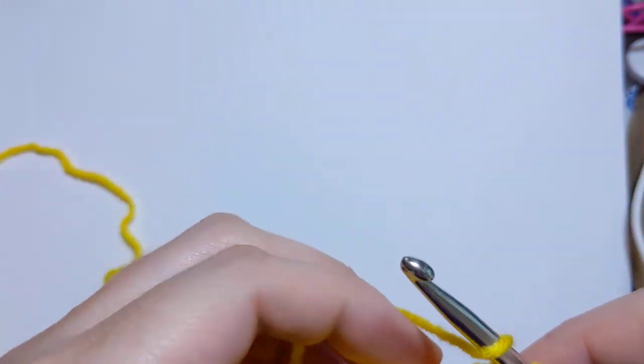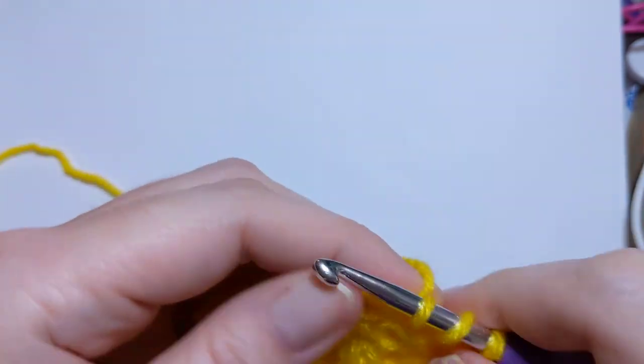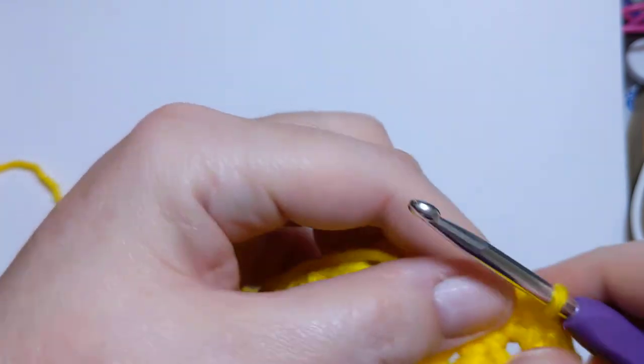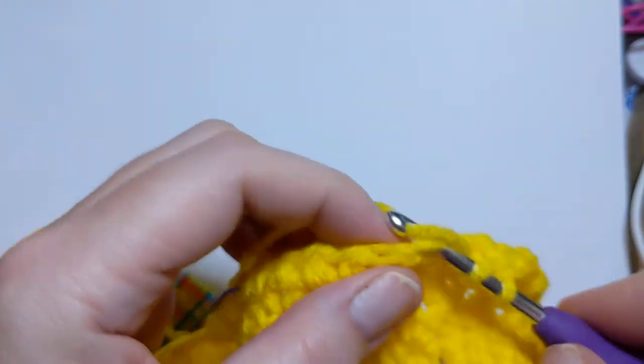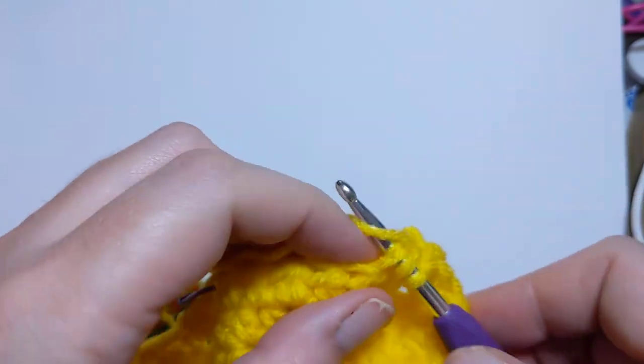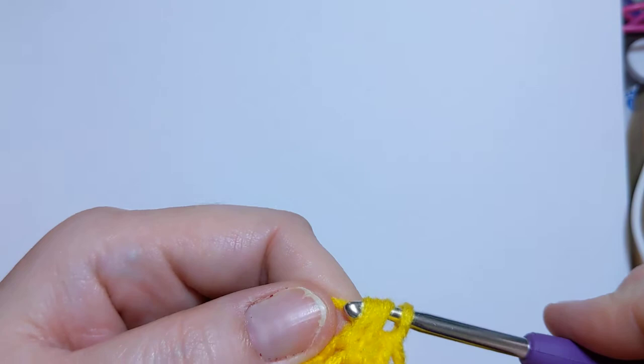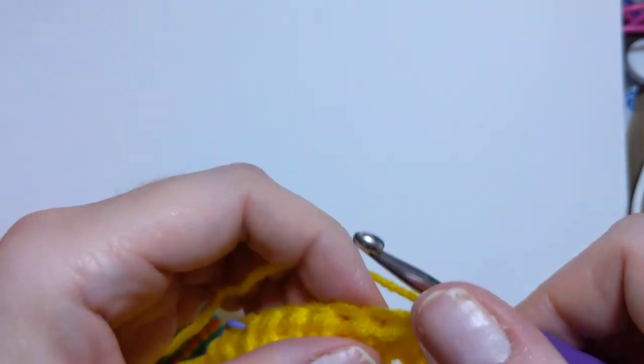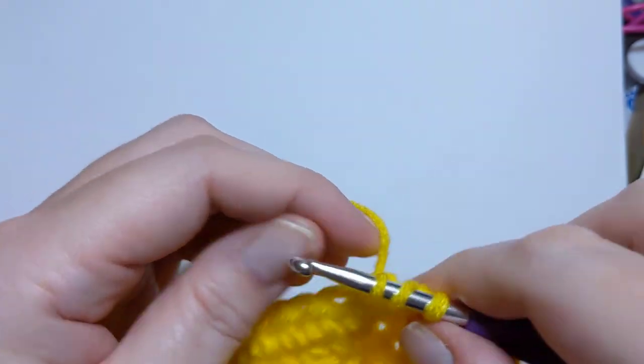That is that one. Now, I'm going to just do half double crochets across my row. And I do love the half double crochet stitch. It's quicker than the double crochet, and it's much taller than a single.